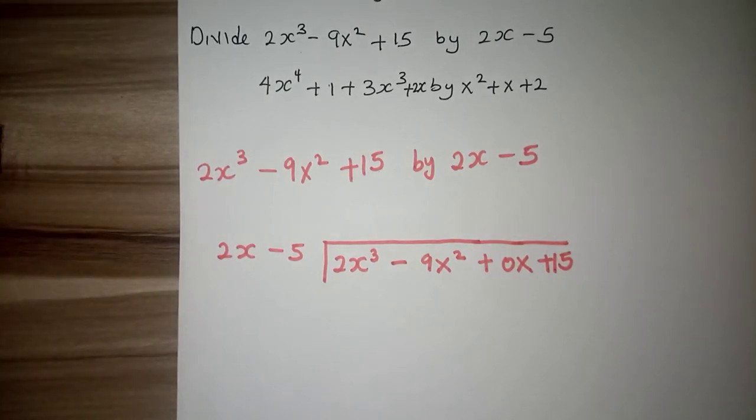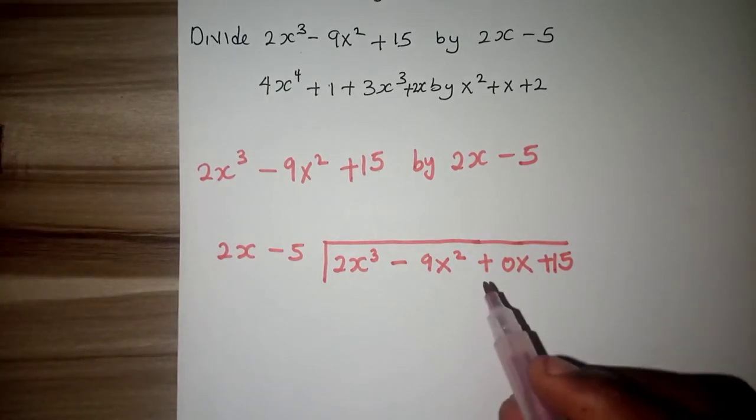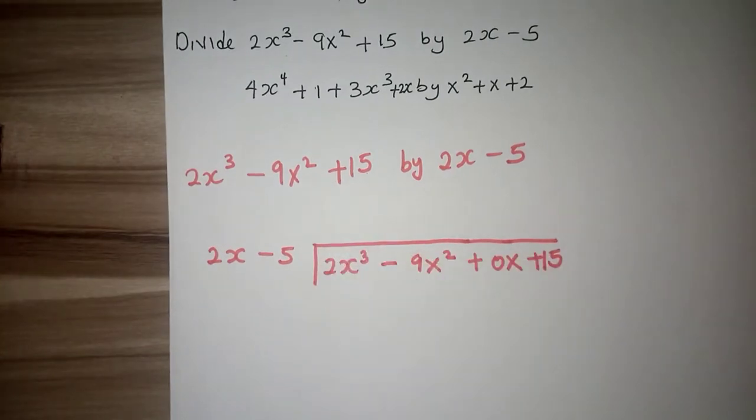Now why do I put 0x there? I did that just because there is a missing term. And for me to get my missing term, I can just replace with 0x.